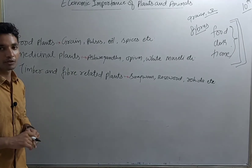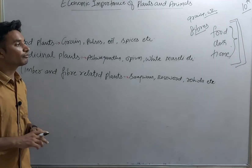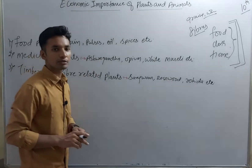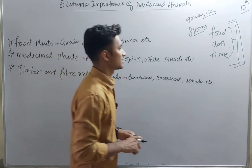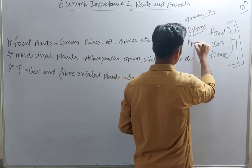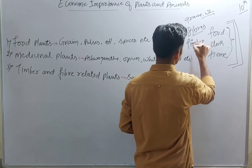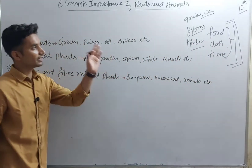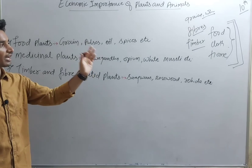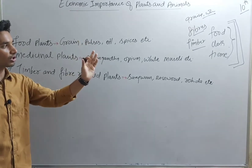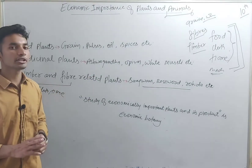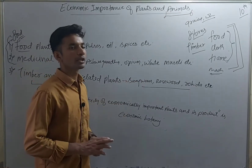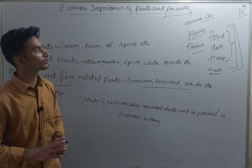For our home, we require wood or timber, and timber is also obtained from plants. So food, cloth, and home — these three components of life — all come from plants. Similarly, animals also contribute to our basic needs.